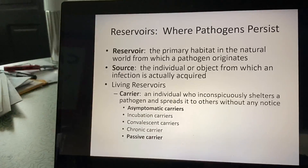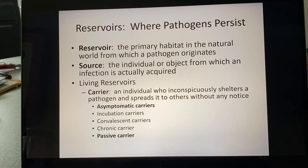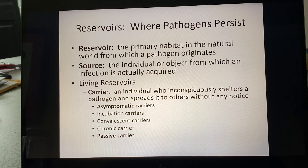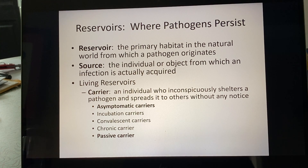The definition of a reservoir is the primary habitat in the natural world from which a pathogen originates. COVID-19 came from some type of live animal living in its primary habitat that was then taken out of that habitat, allowing it to spread. Ebola is thought to have come from a bat or a monkey in the rainforest, so the rainforest itself would be the reservoir — it's a habitat.